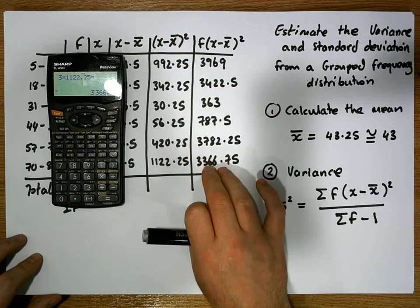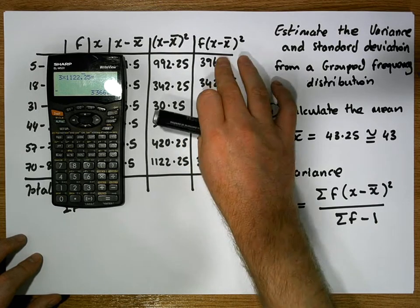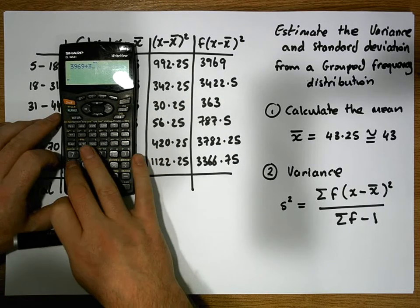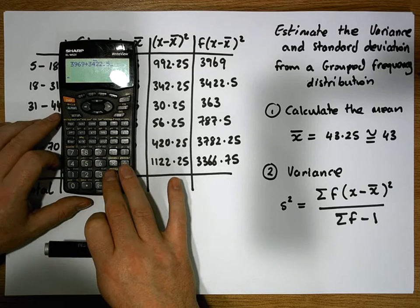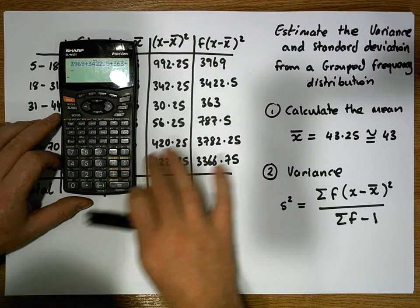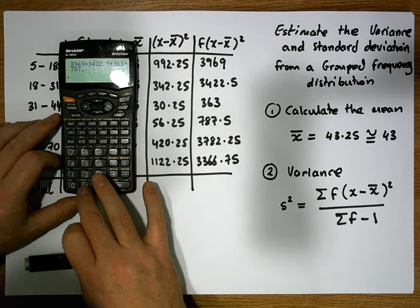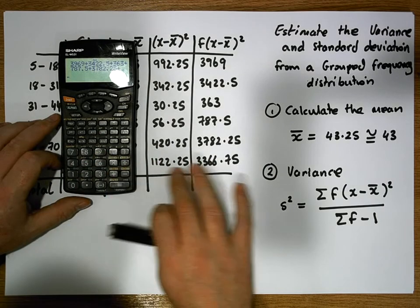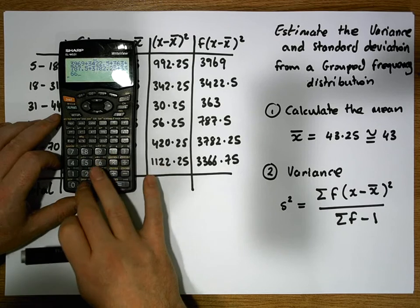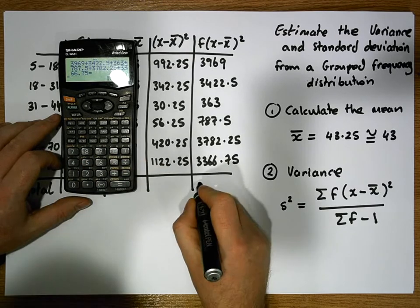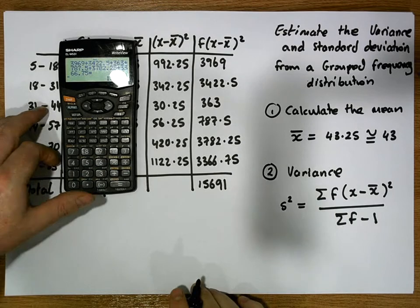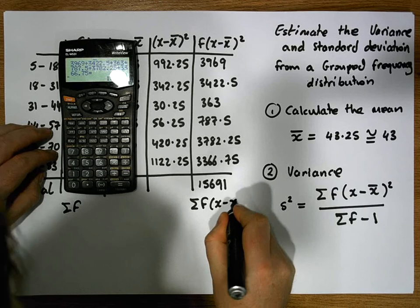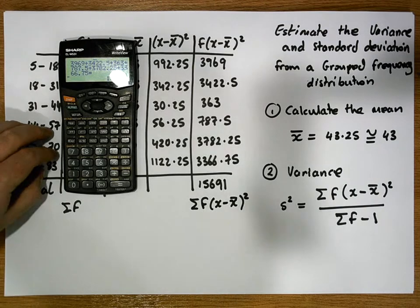We sum up the column: 3969 plus 3422.5 plus 363 plus 787.5 plus 3782.25 plus 3366.75, giving us a value of 15,691. This is the sum of the frequencies times (x minus x̄) squared column.